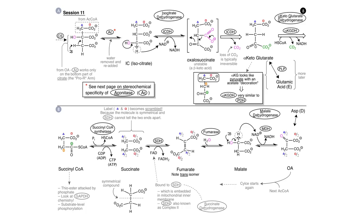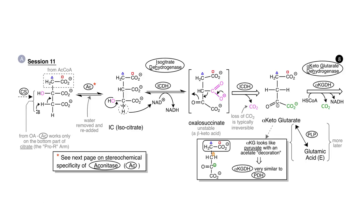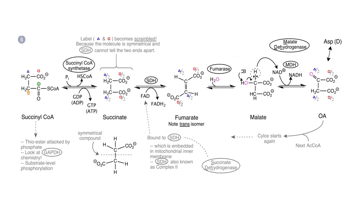Look back at storyboard 8, panel A. Let's imagine that the aconitase chemistry happened on the Pro-S arm, the one in the box. Keep in mind that experiments have shown this does not happen. This is just a hypothetical scenario. In this hypothetical case, the hydroxyl group would end up on the number 2 carbon, the one with the blue triangle. If you traced this molecule all the way around to alpha-ketoglutarate, you would find that alpha-ketoglutarate dehydrogenase would liberate CO2 from the carboxylate with the red box on it.